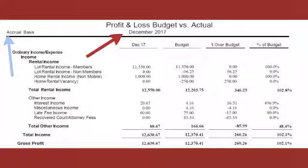So we've got four columns here. We see December 2017 in that first column — that's our actuals for December. And then right next to that it just says budget — that's our budgeted amount for December. So we are comparing those two numbers to each other: what did we actually do versus what did we budget to do?